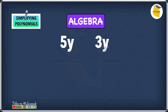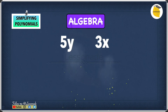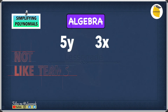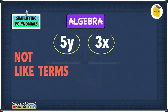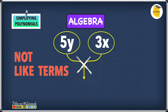Let's have a look at another example: 5y and 3x. Are these like terms? 5y has y as its variable part, and 3x has x as its variable part. We know that y and x are not the same, so these are not like terms. Because they are not like terms, we cannot combine these two to make it simpler.